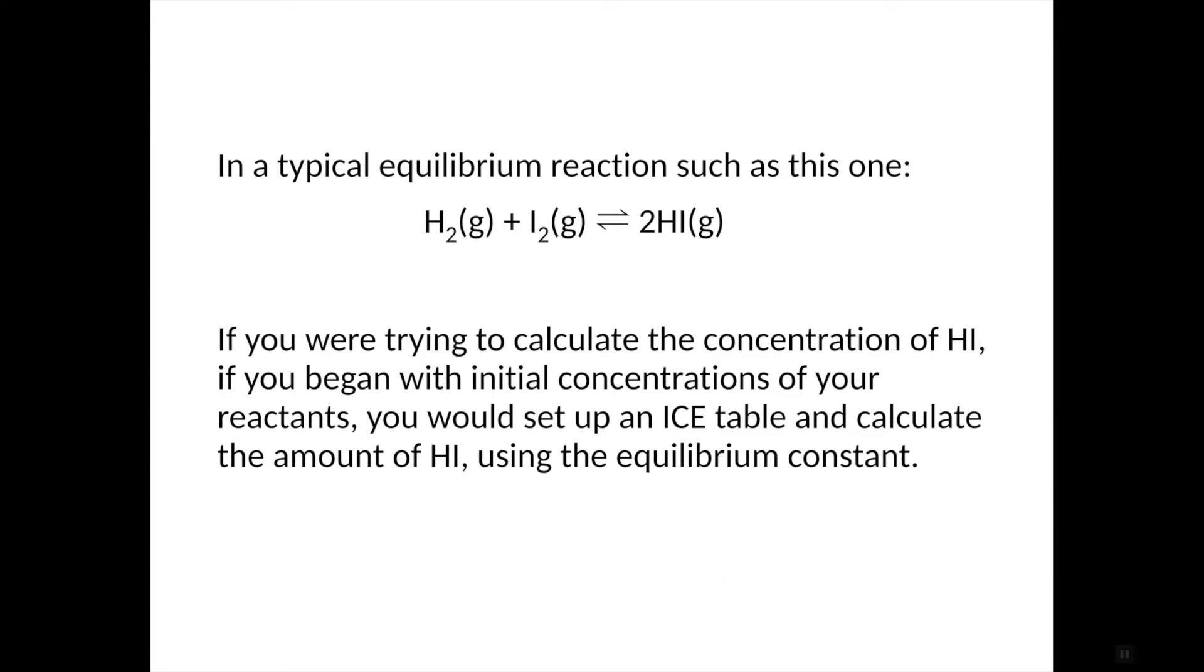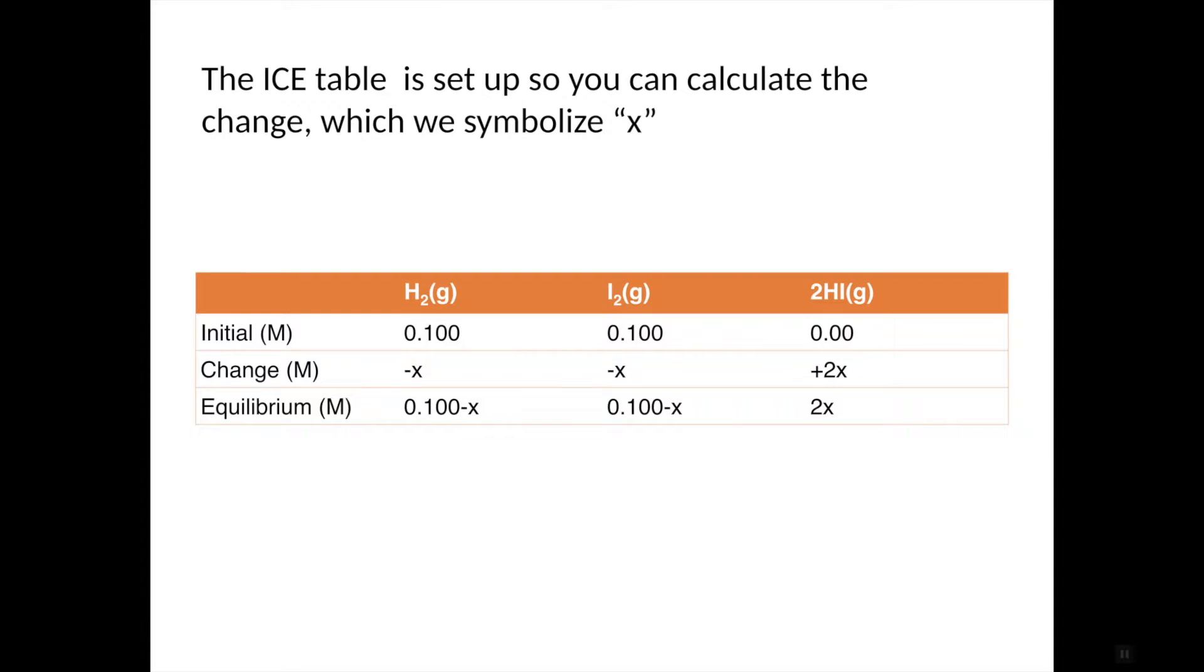So let me start out by looking at a typical equilibrium reaction, such as this one. This is hydrogen and iodine making hydrogen iodide. So if you were trying to calculate the concentration of HI, the product, if you began with initial concentrations of your reactants, something like 0.100 moles per liter, you would typically set up an ICE table and calculate the amount of HI using the equilibrium constant.